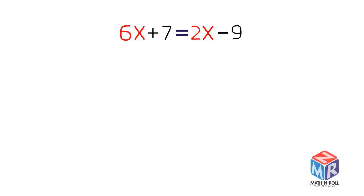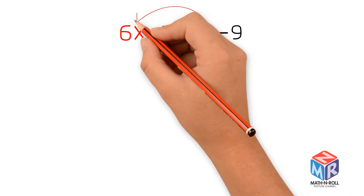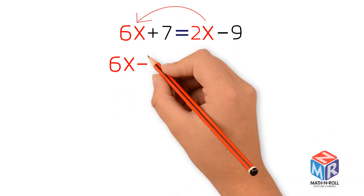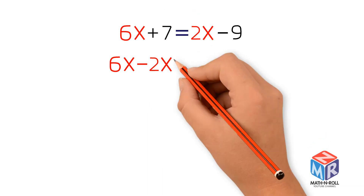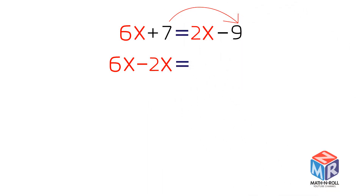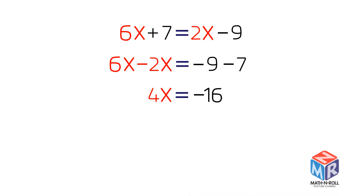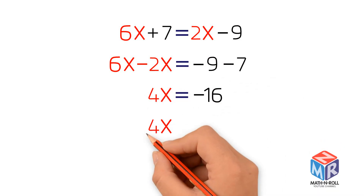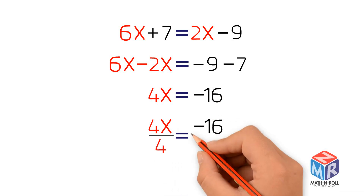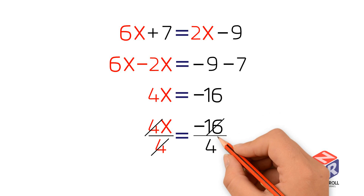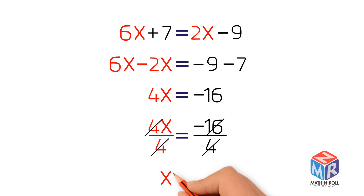Let's try an example. 6x plus 7 equals 2x minus 9. Our goal is to get x on its own. When we carry 2x over the equal sign, we switch the sign to a minus sign. Next, we carry 7 over the equal sign, and we also switch the sign to a minus sign. Now we combine like terms. Divide both sides by 4. x equals negative 4.